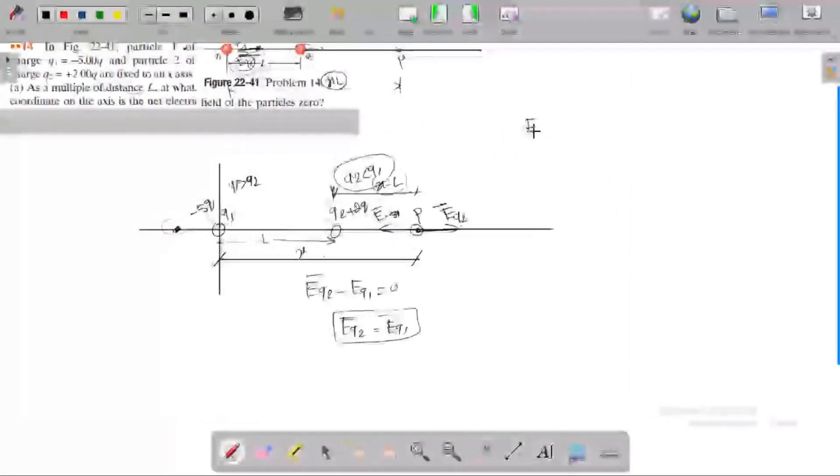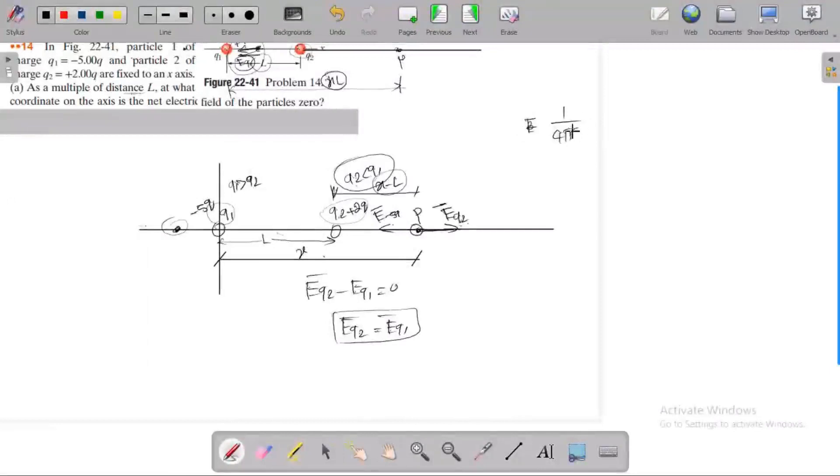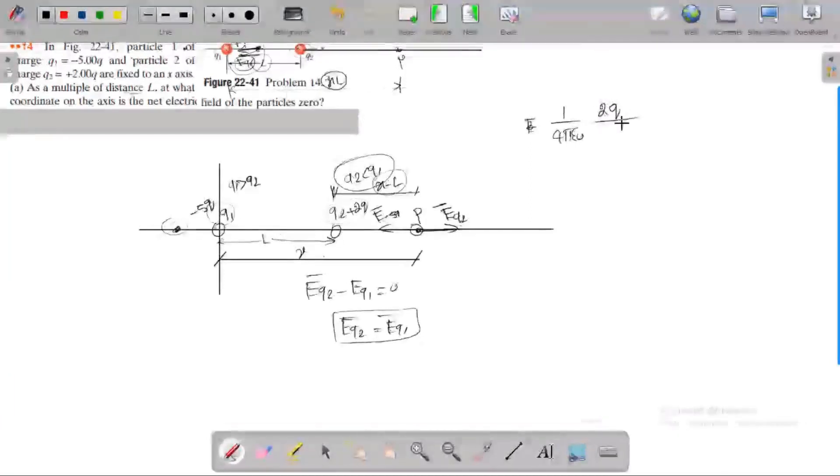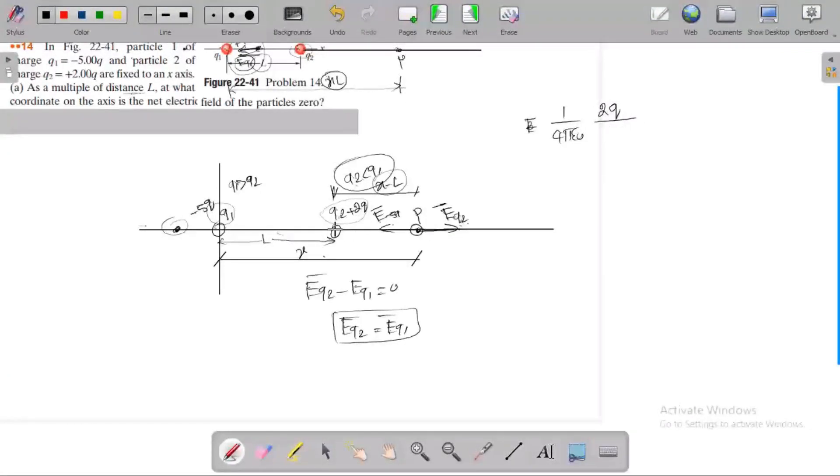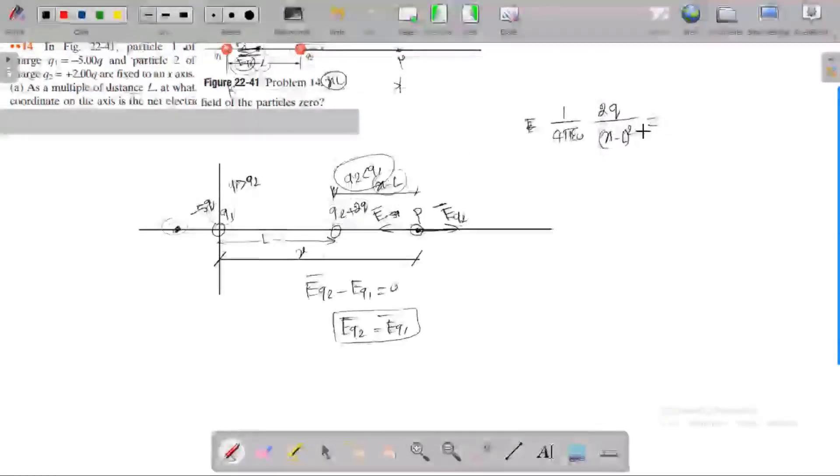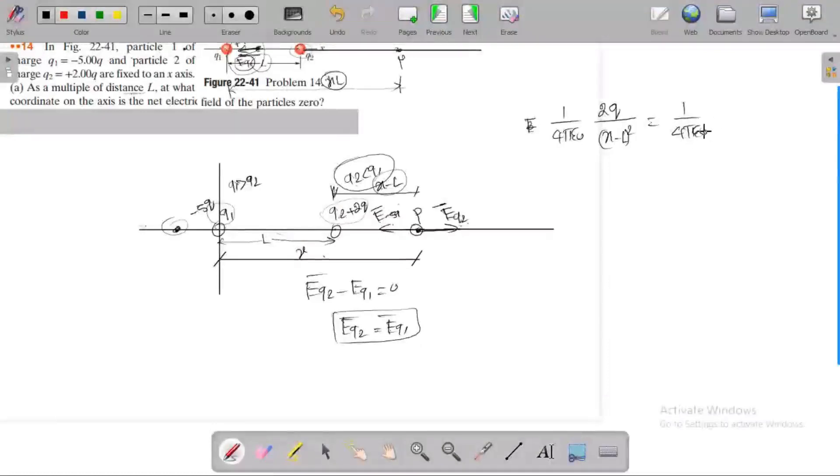The electric field caused by particle 2 is 1 over 4π epsilon zero, times 2Q divided by (x minus L) squared. That equals 1 over 4π epsilon zero times 5Q divided by x squared. By solving, Q cancels out, 4π epsilon zero cancels out. By cross multiplication, 2x squared equals 5(x minus L) squared.